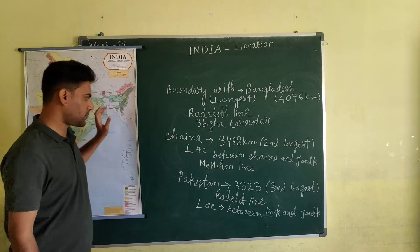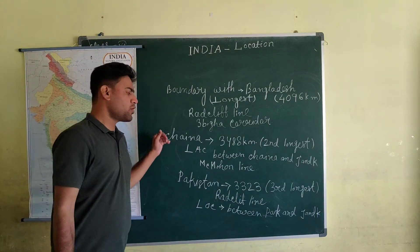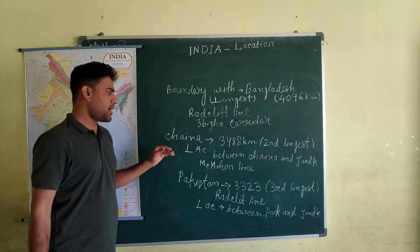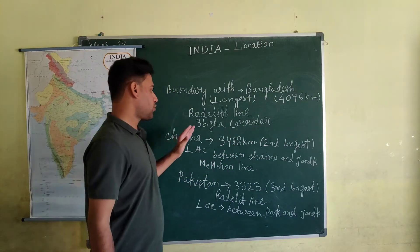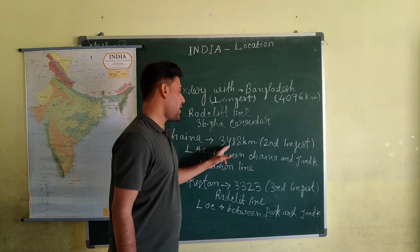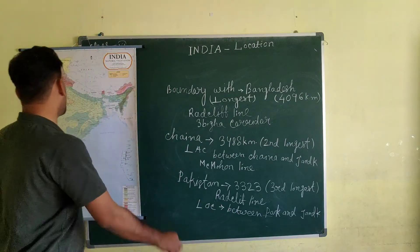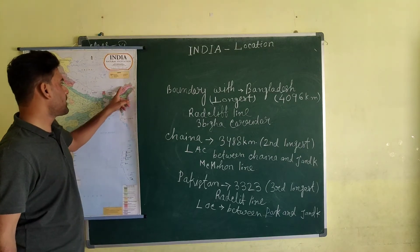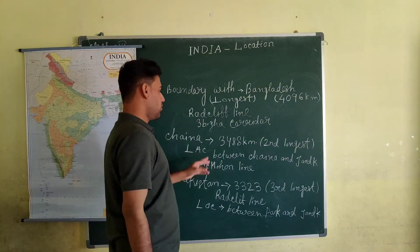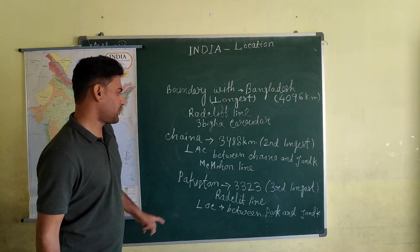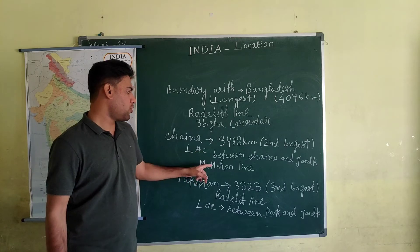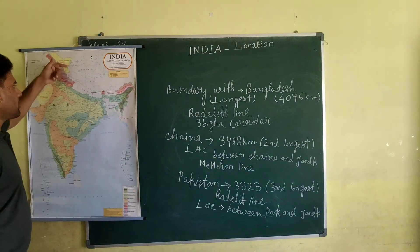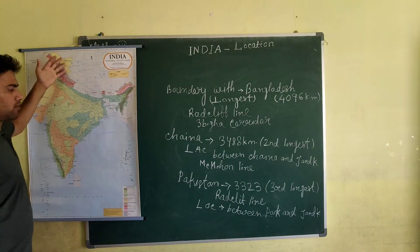The boundary shared with China is the second longest land frontier shared with any country, at about 3,488 km. This line is known as the McMahon Line, and there is also the LAC — Line of Actual Control — between China and Kashmir.